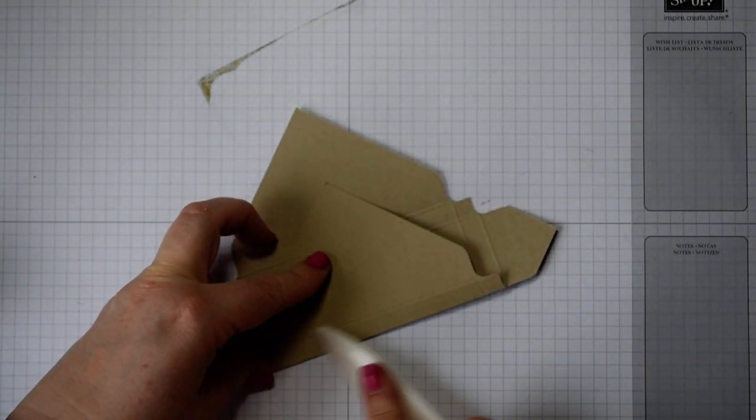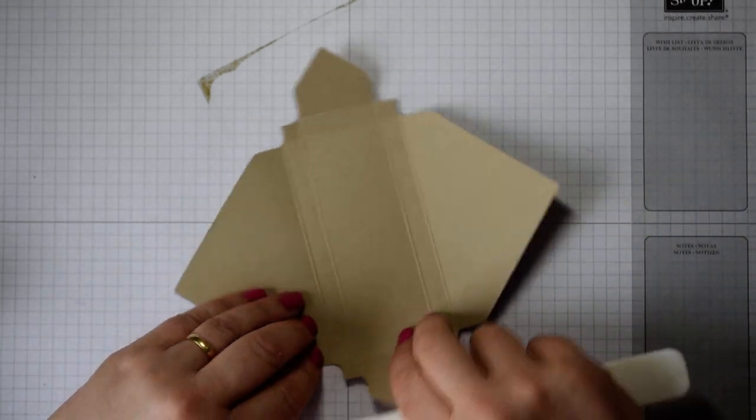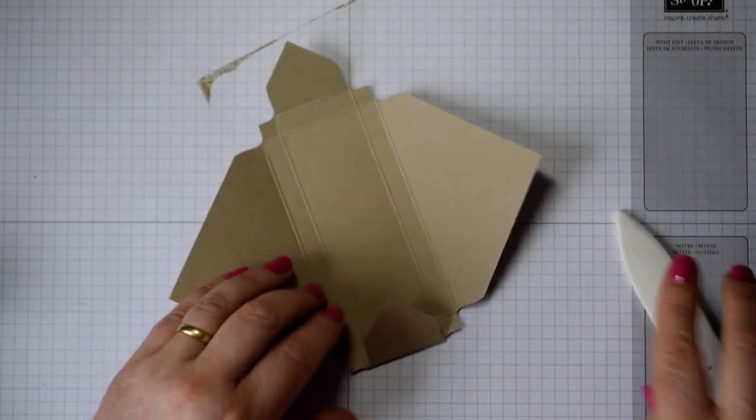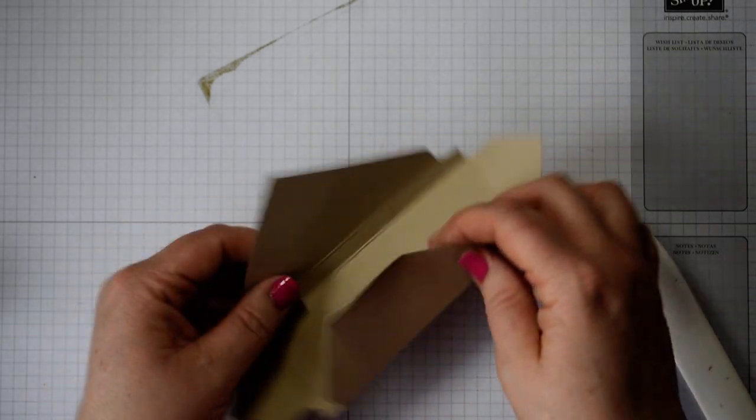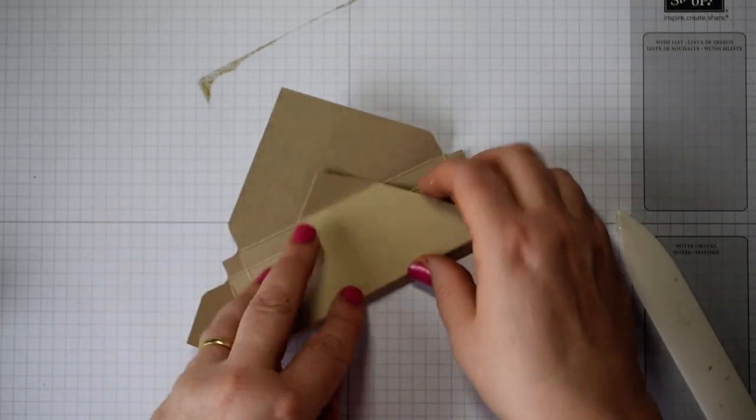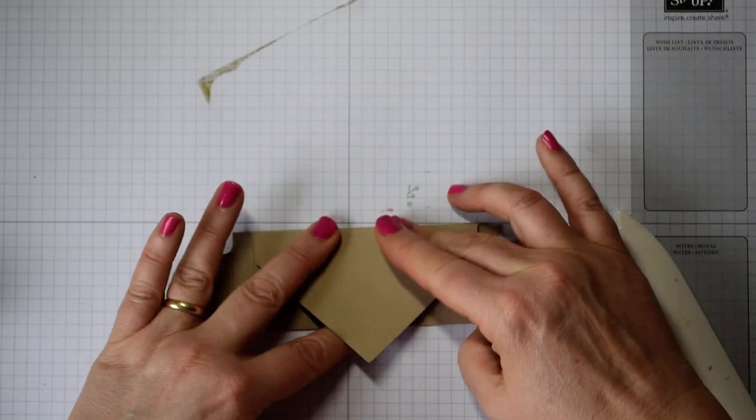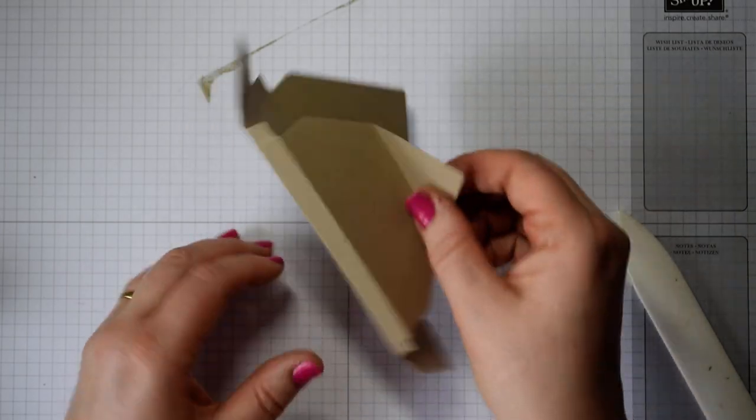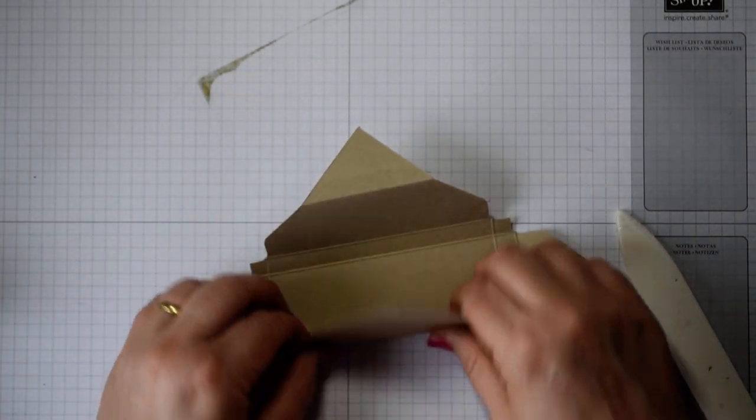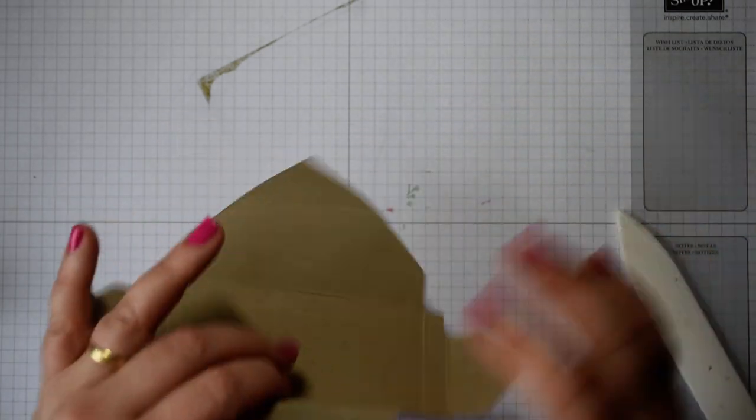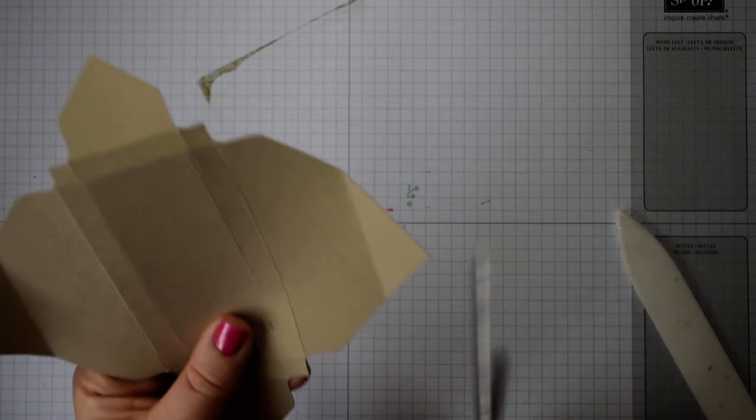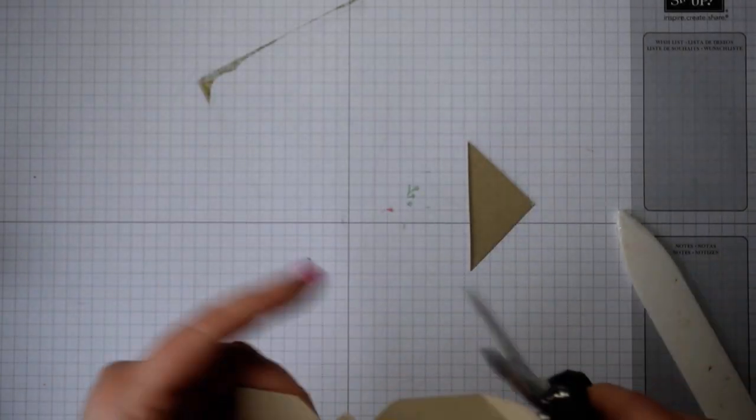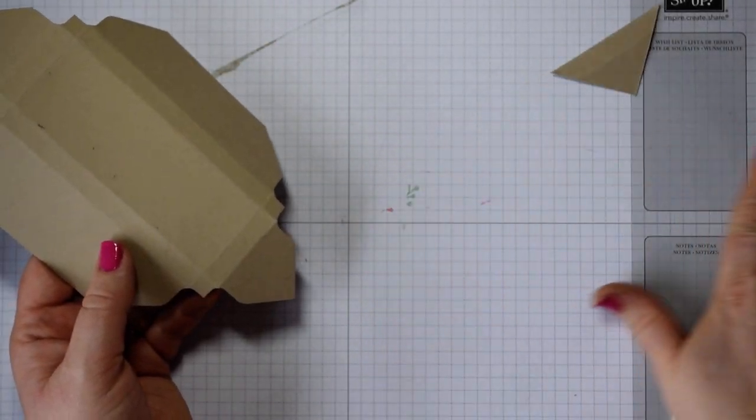You'll notice that because of the size, the flaps are a bit big and go in, so we're going to need to trim those. All you're going to do is fold on the inner score line and then fold up, and that's going to be simple to trim away. Fold the inner score line and the outer on the opposite side. Then come in with your scissors and just trim those away.